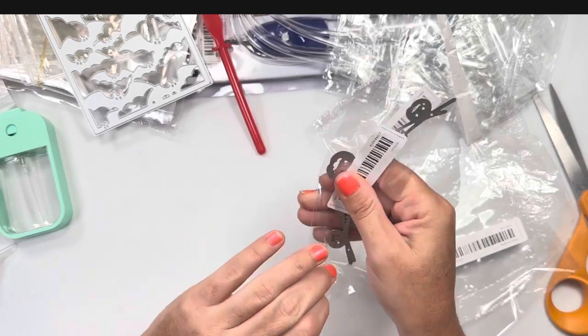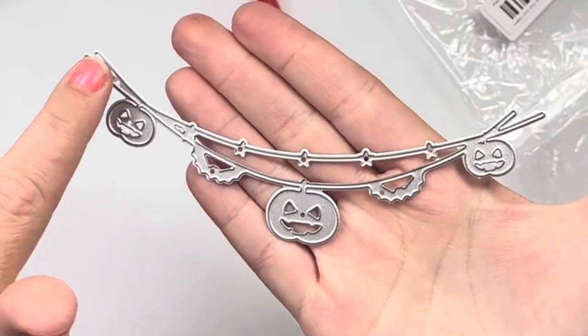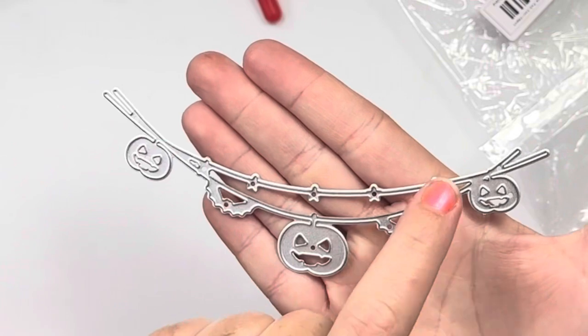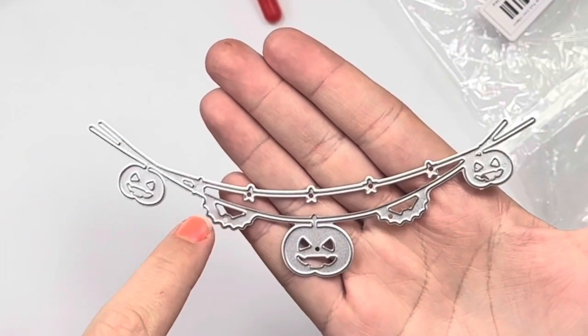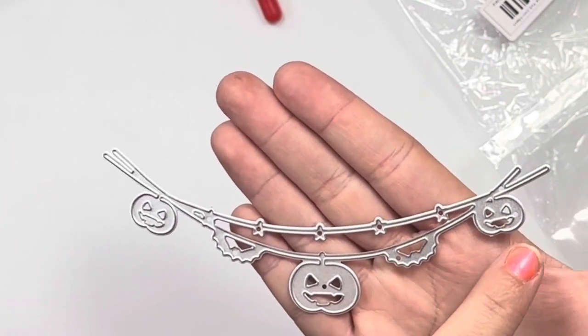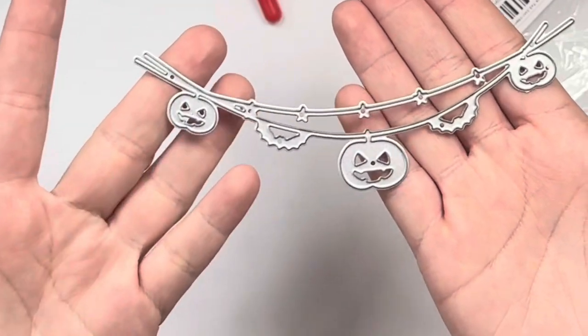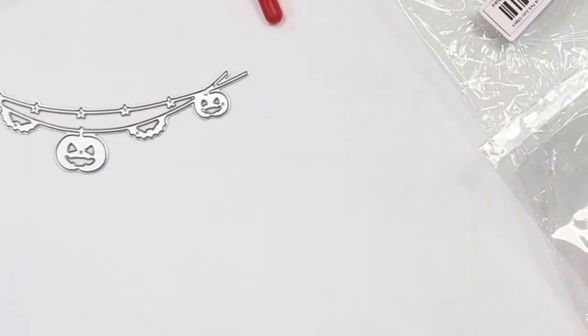Next is this guy for Halloween. Super fun double loop. So the top one has stars. The next one has little bats and then jack-o-lanterns alternating. Super cute fun die. Probably about five inches.